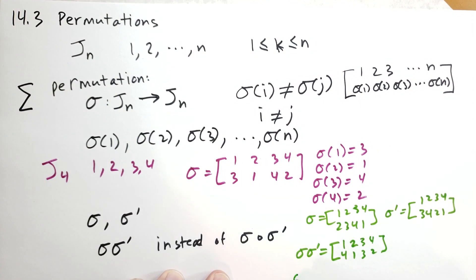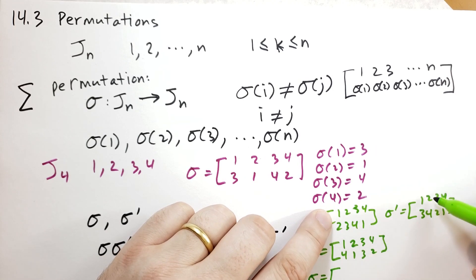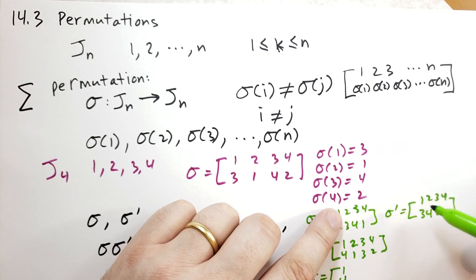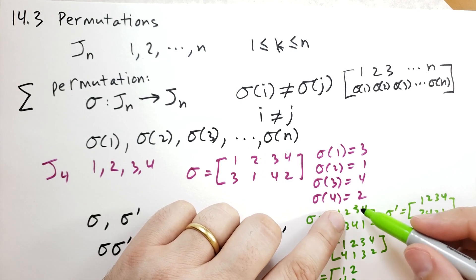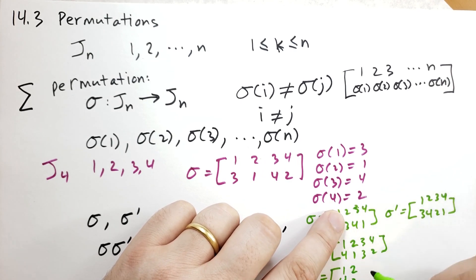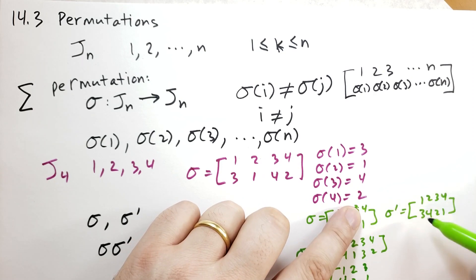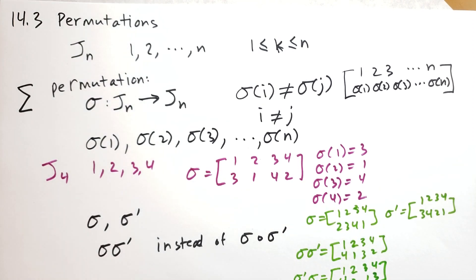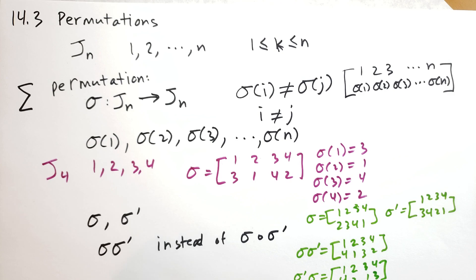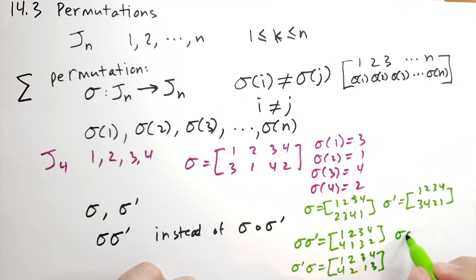For sigma prime sigma, we do sigma first: 1 goes to 2, 2 goes to 4, so 1 goes to 4. Then 2 goes to 3, 3 goes to 2, so 2 goes to 2. Then 3 goes to 4, 4 goes to 1, so 3 goes to 1. And 4 goes to 1, 1 goes to 3, so 4 goes to 3. So we have sigma sigma-prime and sigma-prime sigma, and note that this is not commutative — sigma sigma-prime does not necessarily equal sigma-prime sigma.